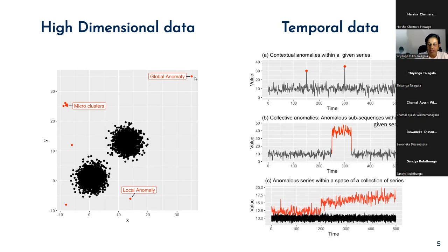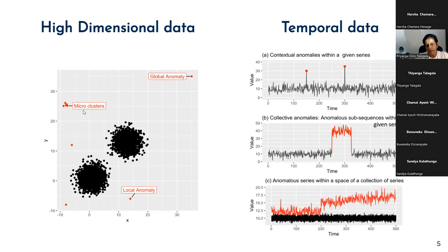In high-dimensional data we assume observations are independent. When it comes to temporal data, you can identify three different types of anomaly detection problems. The first is contextual anomalies — also called point anomalies — within a given time series, where we try to identify observations that significantly deviate from the rest of the series. The second type is collective anomalies: anomalous subsequences within a given time series, where the focus is not on individual observations but on sequences deviating from the general pattern.